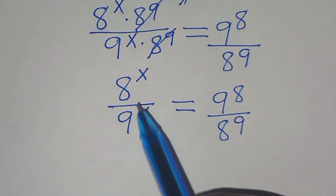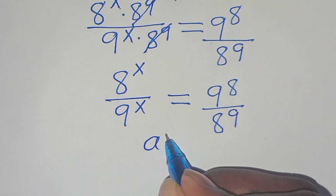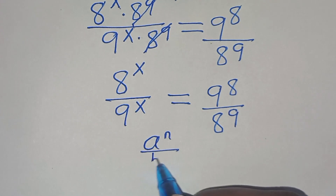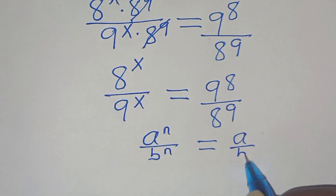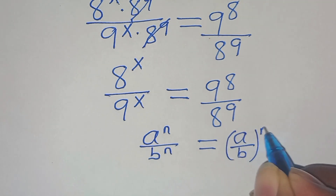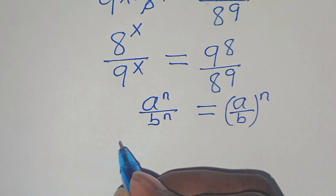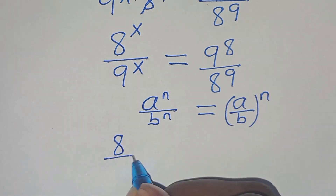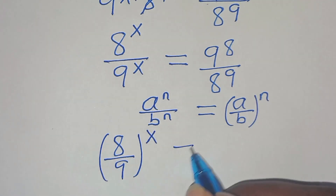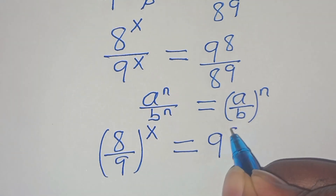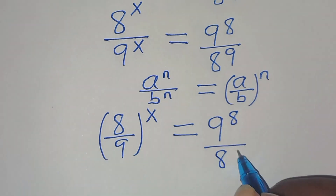Now, 8 to the power of x divided by 9 to the power of x is in the form of a to the power of n divided by b to the power of n, which can be expressed as (a over b) raised to the power of n. Applying this exponent property, we have (8 over 9) raised to the power of x, equal to 9 to the power of 8 divided by 8 to the power of 9.